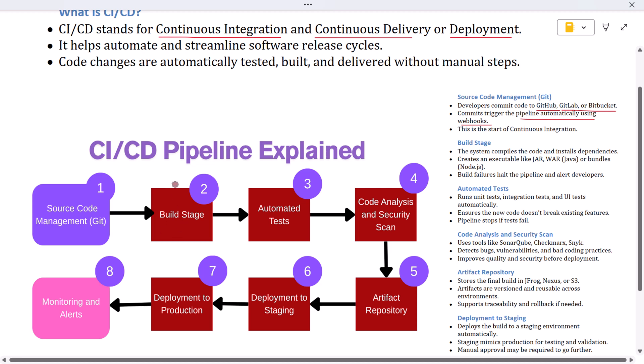Next comes the build stage. This is where the system compiles the code, installs dependencies, and prepares the application into an executable format. If you're using Java, this is where Maven or Gradle builds the JAR or WAR file. In Node.js, it might run npm install and bundle everything. The goal is to make sure the code compiles correctly and the application can actually run.